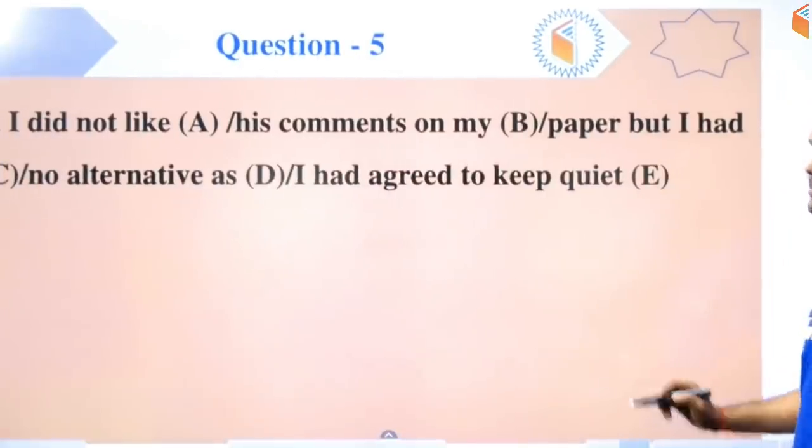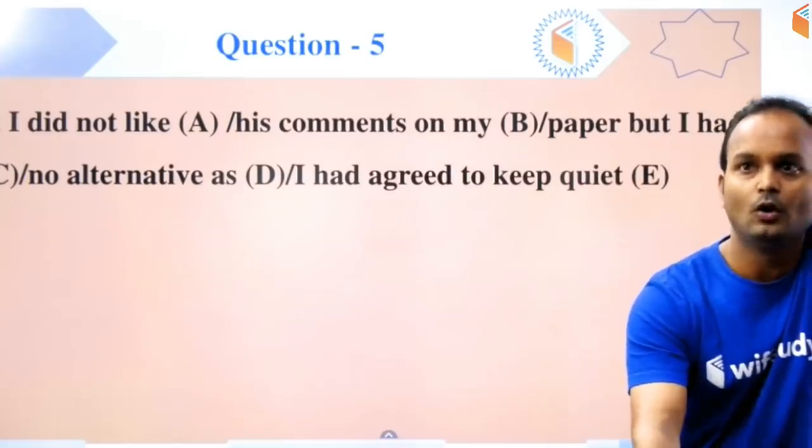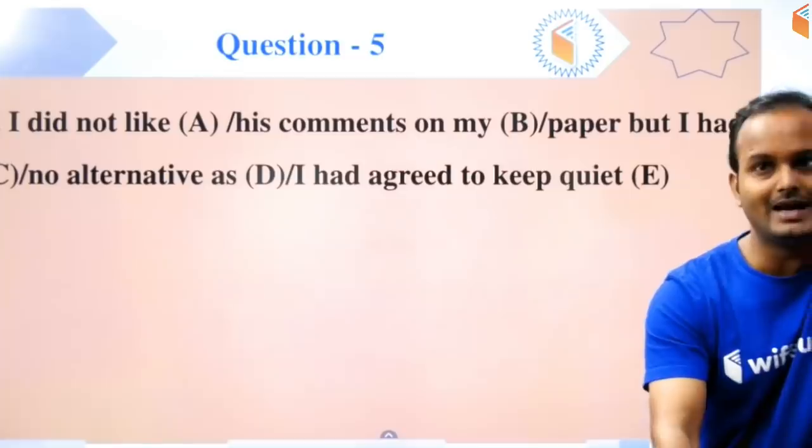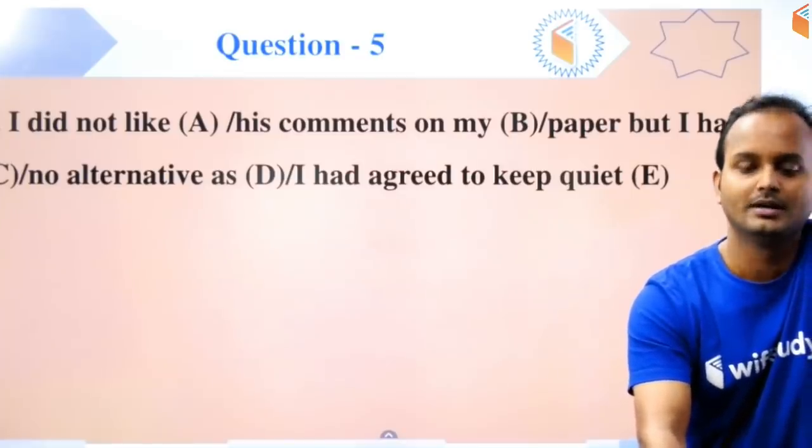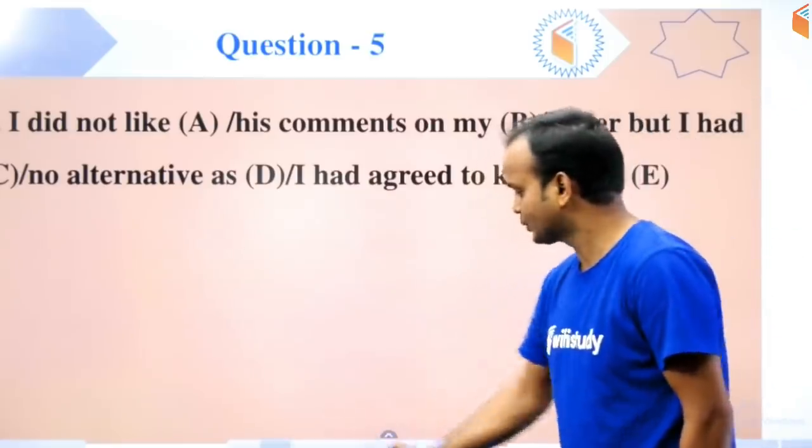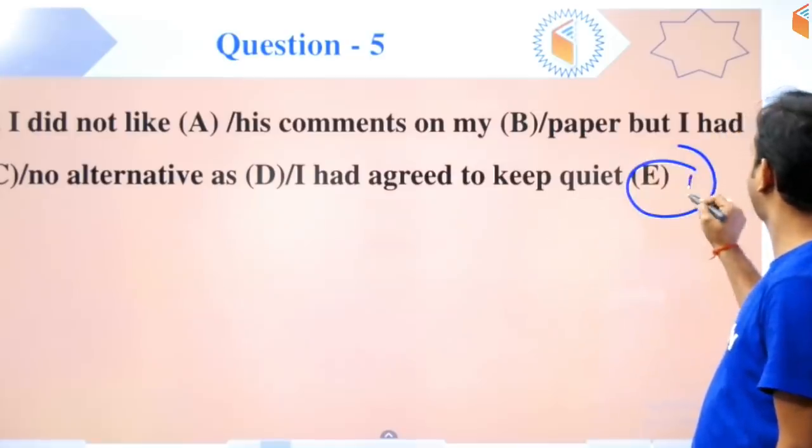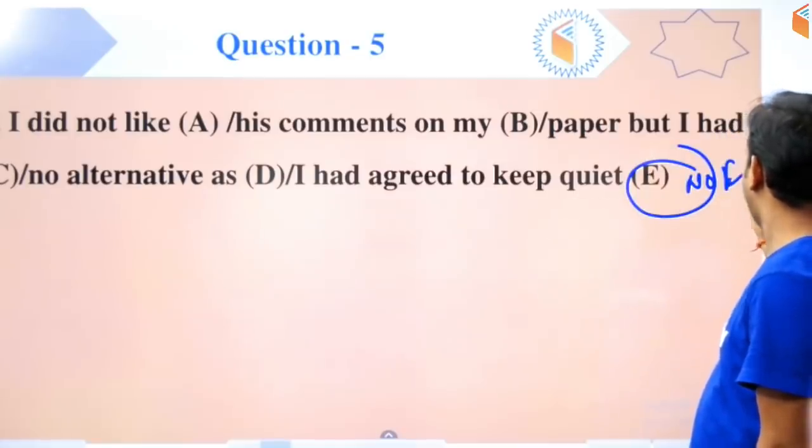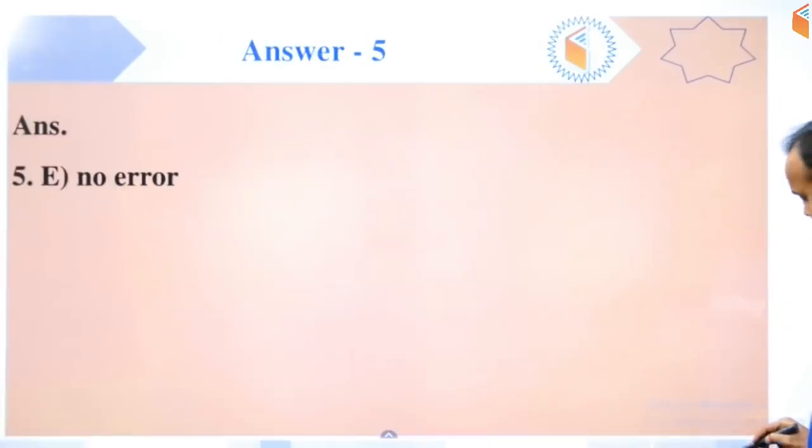Question number five on your screen: 'I did not like his comments on my paper but I had no alternative as I had agreed to keep quiet.' This is question number five. If we talk about question five, there is no grammatical error in this, and 'no error' is not even written here, whereas the answer is no error. So the answer is: grammatically there is no error in this.